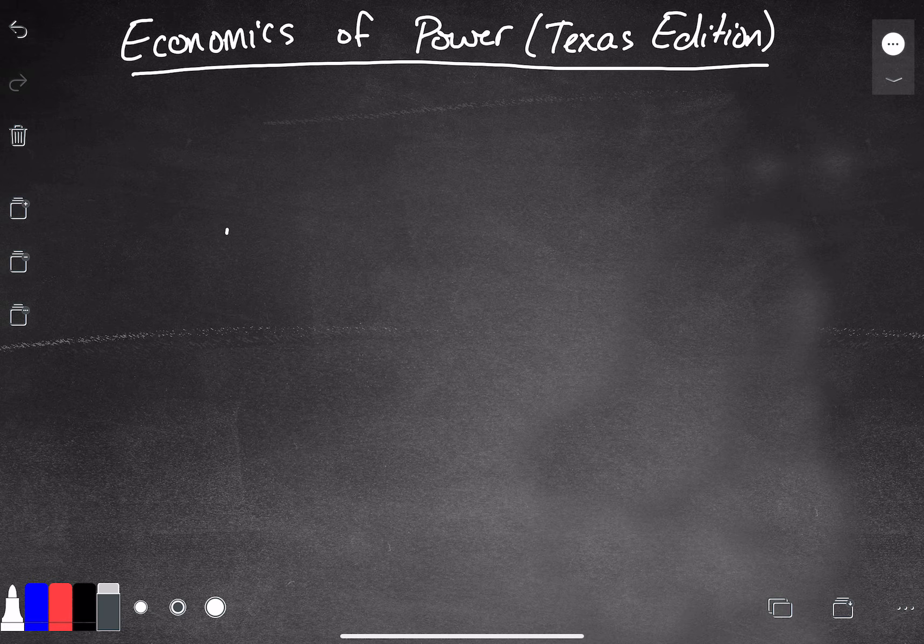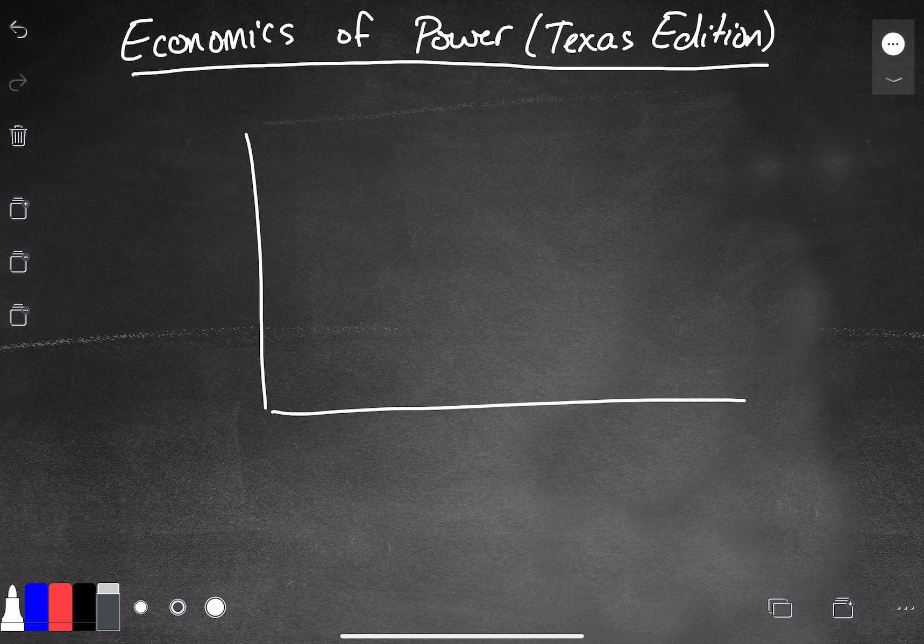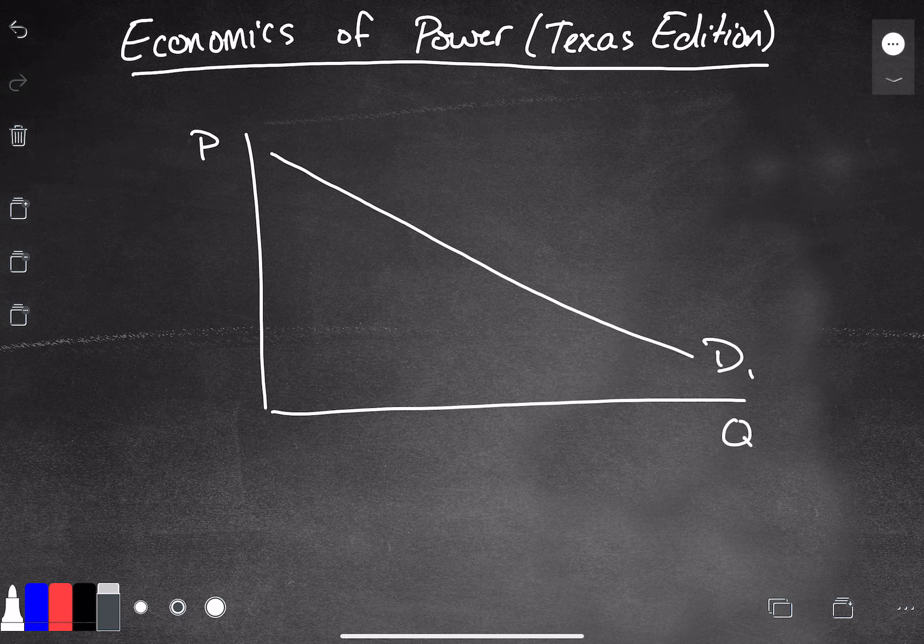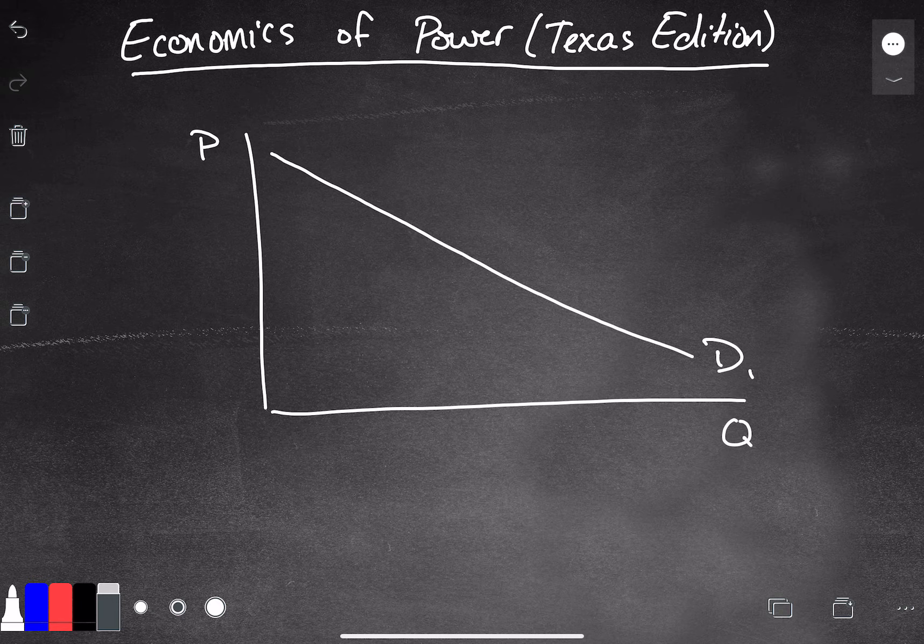So let's think about this in terms of ordinary supply and demand. We probably have a downward sloping demand curve. That makes sense because at lower prices, people are going to want to buy more electricity or use more electricity. And at higher prices, they're probably going to want to use less electricity.